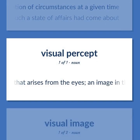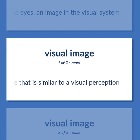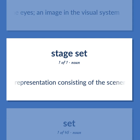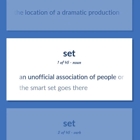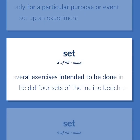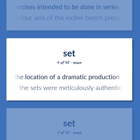Set: A percept that arises from the eyes; an image in the visual system. A mental image that is similar to a visual perception. Representation consisting of the scenery and other properties used to identify the location of a dramatic production. An unofficial association of people or groups — the smart set goes there. Get ready for a particular purpose or event — set up an experiment. Several exercises intended to be done in series — he did four sets of the incline bench press. Representation consisting of the scenery and other properties used to identify the location of a dramatic production — the sets were meticulously authentic.